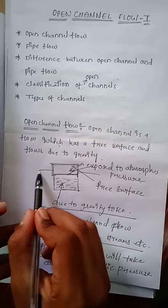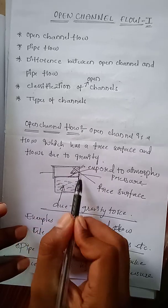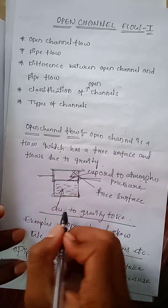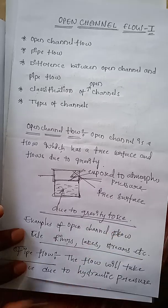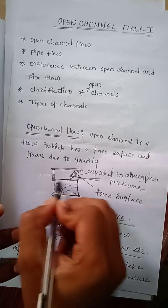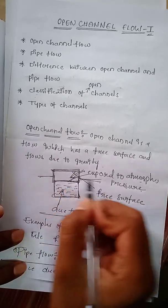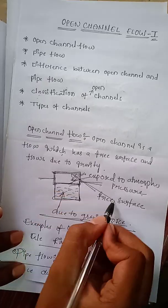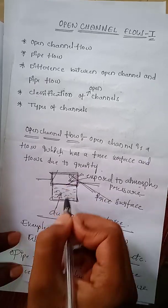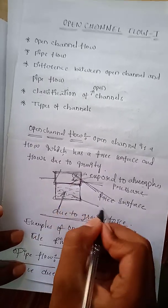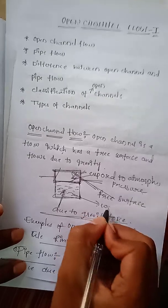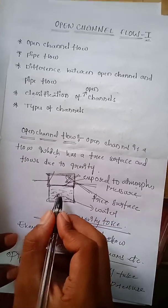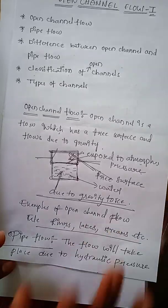Let us consider a rectangular channel. In this rectangular channel the flow takes place due to gravity force, and the top surface of this channel is exposed to atmospheric pressure and has a free surface. The liquid considered is water, and the flow takes place due to gravity force.